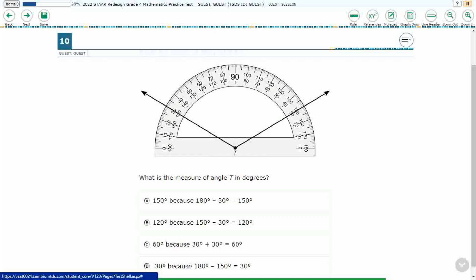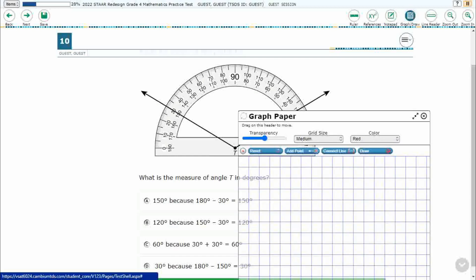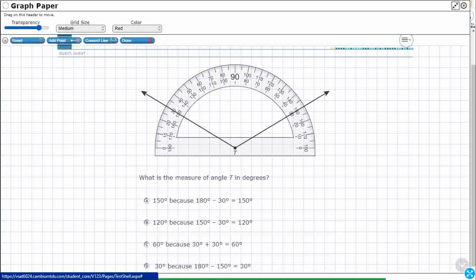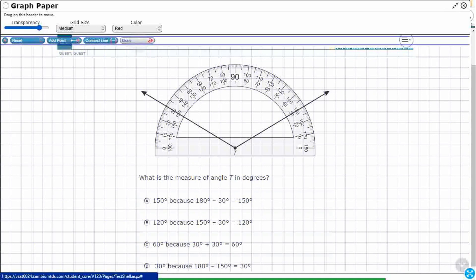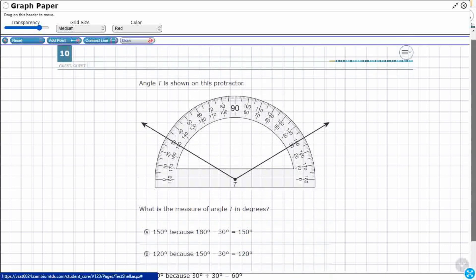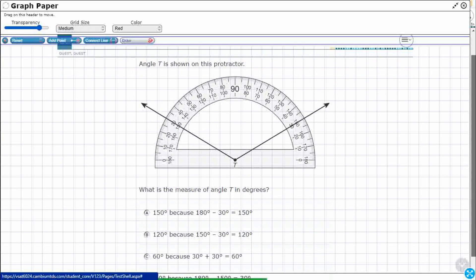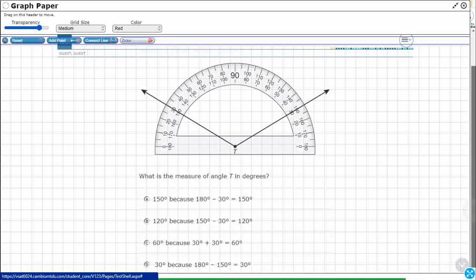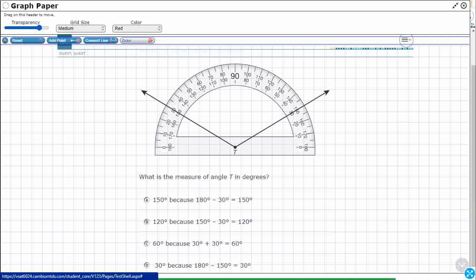So, we've got angle T and we just need to measure it. Let's open up our graph draw feature, increase the transparency, and we'll use the draw feature. If we need to, we can scroll up and down, but what we draw doesn't move. So if possible, I always kind of like to keep the picture in the back the same.